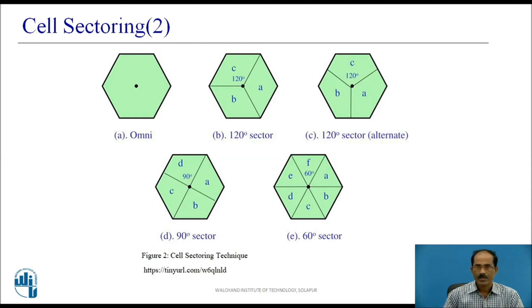Different geometries require evaluating how far the most distant mobile is from the serving base station antenna. Another method is to use 90-degree sector antennas, with sectors A, B, C, and D. Yet another method is to use 60-degree sectors, dividing the original cell into 6 sectors of 60 degrees each. Normally, anything below 60 degrees is not preferred, because too many sectors require too many handoffs and too many antennas.